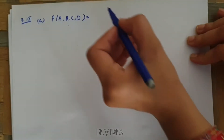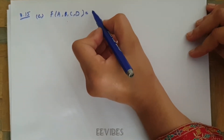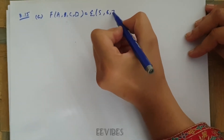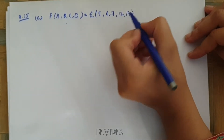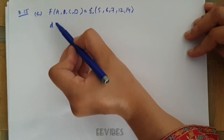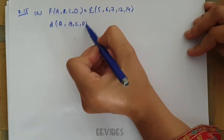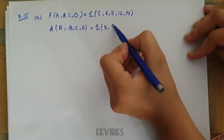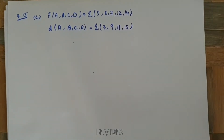The function is represented as the summation over minterms 5, 6, 7, 12, and 14. The don't care conditions given for this function, with variables A, B, C, and D, are represented by minterms 3, 9, 11, and 15.